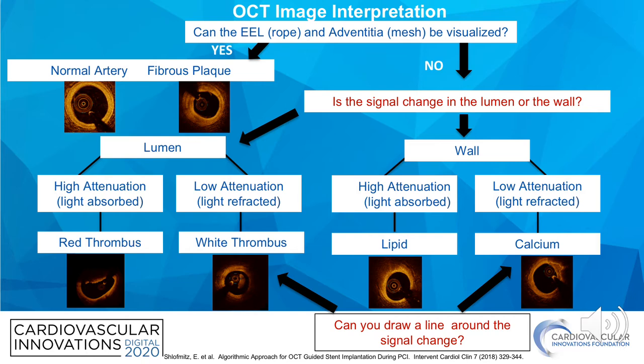Once you've determined if the signal change is within the lumen or the wall of the artery, the next thing you want to do is determine if you can draw a line around the area where there's signal change. So if there's signal change within the lumen and you can draw a line around the area of the signal change and it's well demarcated, you know you're looking at white thrombus. Whereas if you're unable to identify where the signal change ends, it's red thrombus when that signal change is within the lumen.